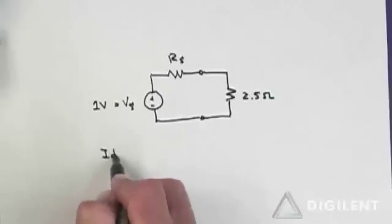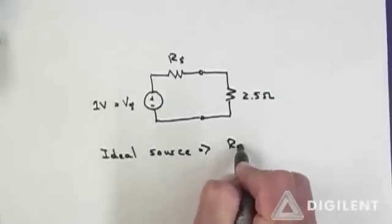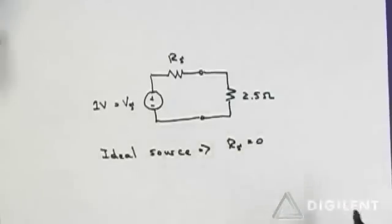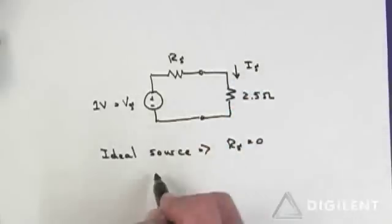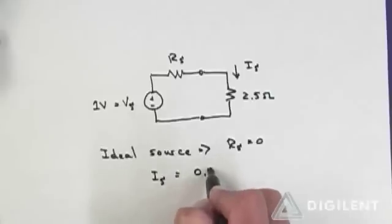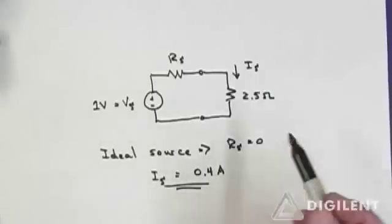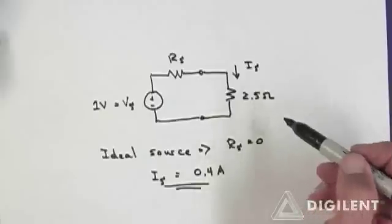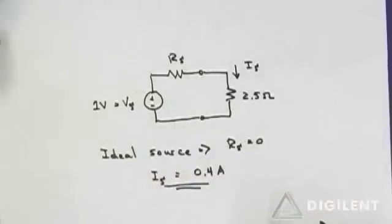For an ideal source, R sub S is 0. We have no internal resistance. Therefore, I sub S should be 1 over 2.5 or about 0.4 amps. If R sub S is not 0, if it is a positive number, this source current will go down and we will deliver less power to the load than we are expecting. Let's demonstrate the circuit and see what kind of power delivery we are going to be getting out of this.